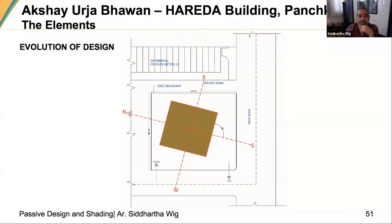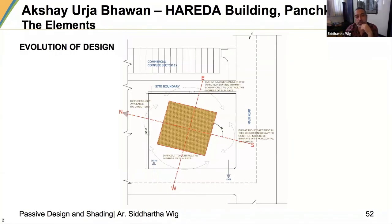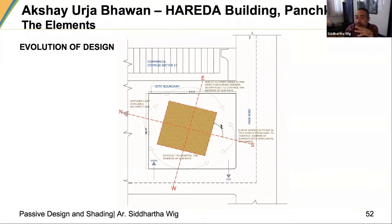We looked at the potential of site: the area where the sun would be high in summer and comfortable in winter; the east and west areas would be difficult to control; the north had a lot of light but sun was not so much of a problem.